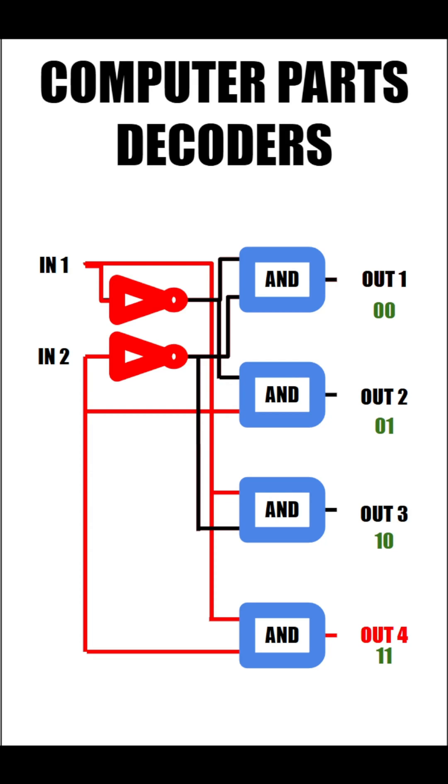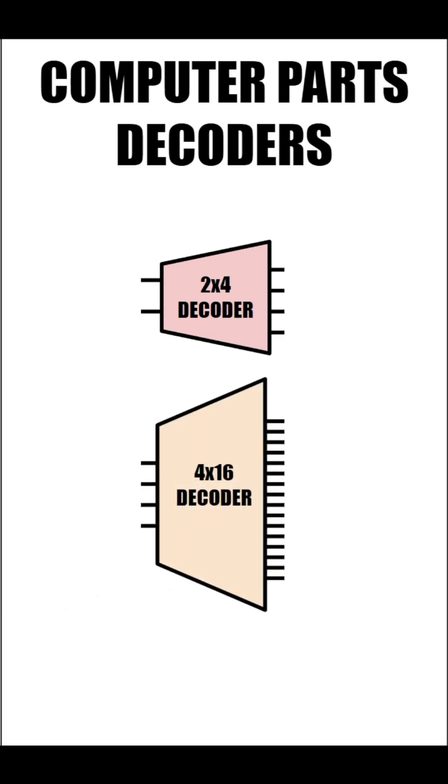But this is pretty complicated to look at, so we can rewrite this simply by using a smaller symbol for a 2x4 decoder. But most of the time, we'll want decoders bigger than this, and by applying this concept the same way, we can create larger decoders, such as the 4x16 decoder.